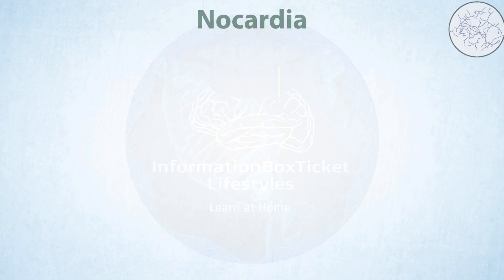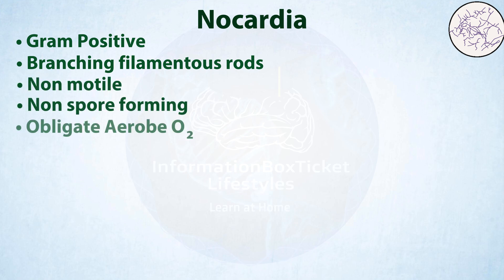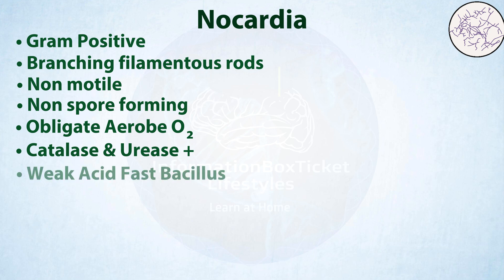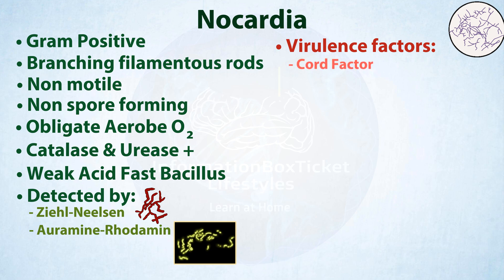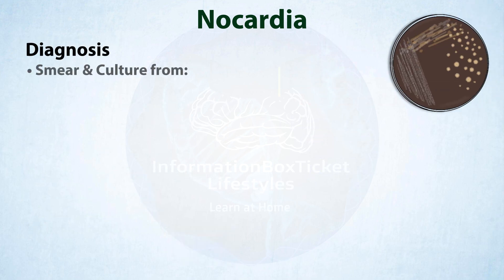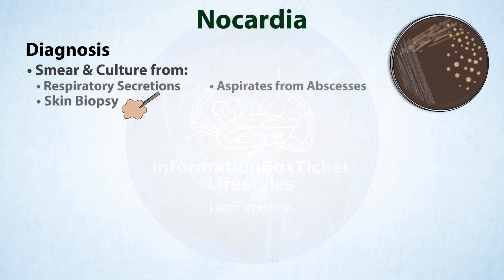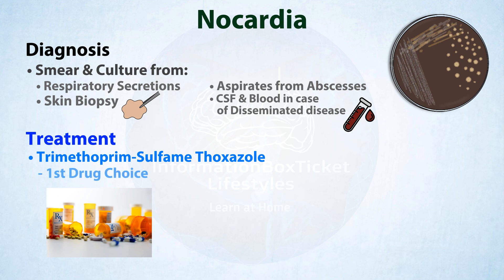Just a brief summary: Nocardia is a gram-positive, branching, filamentous rod bacterium commonly found in soil. It is non-motile, non-spore-producing, obligate aerobe, catalase and urease-positive, weak-acid-fast bacillus that may be detected with Ziehl-Neelsen and auramine-rhodamine stain. It can grow on a variety of media into white, yellow, or orange filamentous colonies with a powdery appearance. It possesses a few virulence factors, including cord factor, catalase, and superoxide dismutase, which it exploits to escape the immune system. It produces nocardiosis, which comes in three forms: cutaneous, pulmonary, and disseminated. Bacteria are identified in a smear or culture from respiratory secretions, skin biopsy samples, aspirates from abscesses or CSF, and blood in cases of disseminated illness, and trimethoprim-sulfamethoxazole is used as the first line of therapy.